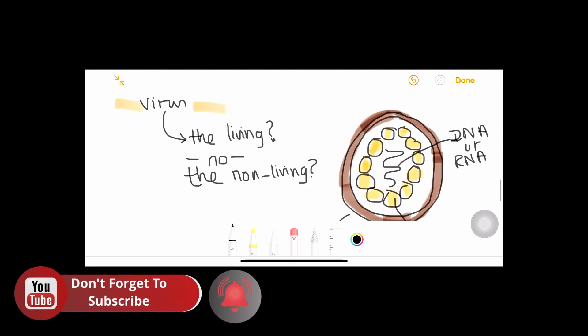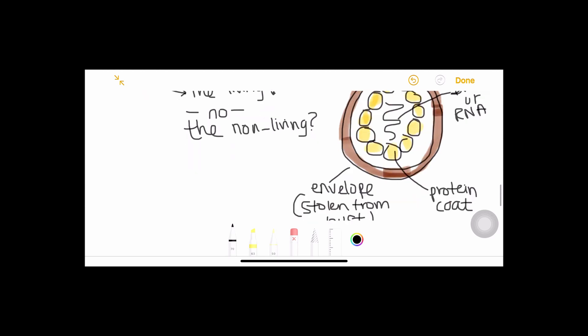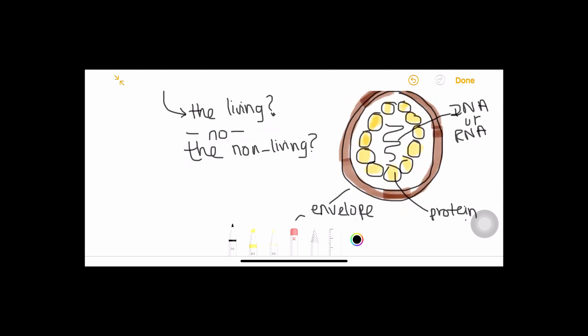Then we come to the virus. Is it living or is it non-living? Well, I'll let you think about it till I explain the structure. Very simple structure guys, it just has an envelope which they steal from the host cell, a protein coat, and its genetic material could be either DNA or RNA. Viruses only reproduce inside the living cell. So far it is categorized under a non-living organism, it's simply categorized as a particle.